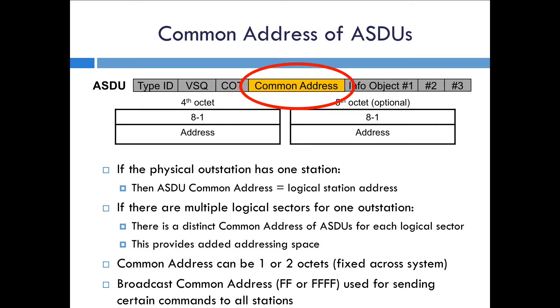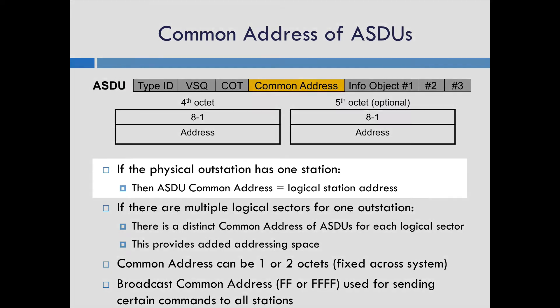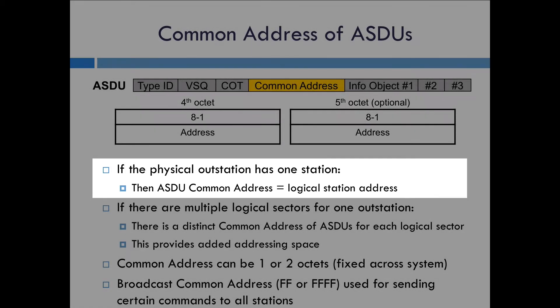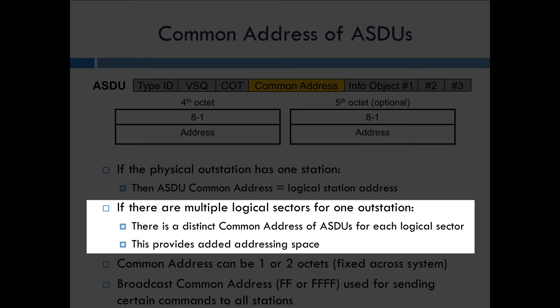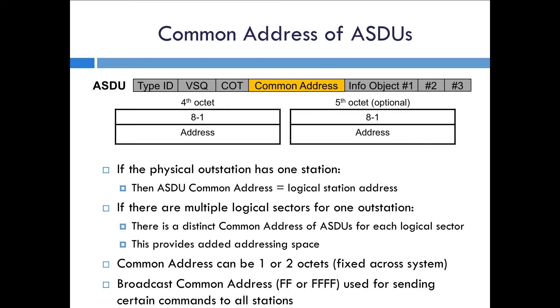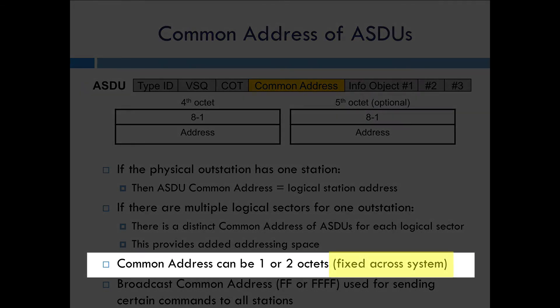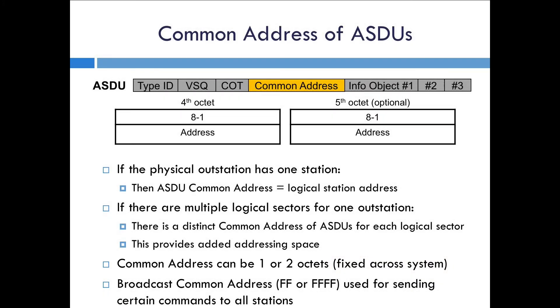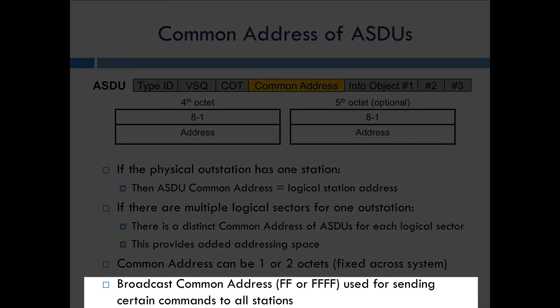The last part of the ASDU header is the common address. Each physical outstation can have multiple sectors, so there are several different ways to handle addressing. If you have just one station in one sector, the ASDU common address really is the station's address. If you want multiple logical sectors for one outstation, you can have a common address for each sector, expanding your addressing space and allowing you to segment different objects into different sectors. The common address can be one or two octets, but that's fixed across the entire system. There's also a concept of a broadcast address — set to FF for one-octet addressing or FFFF for two-octet addressing — which all outstations will see and process.